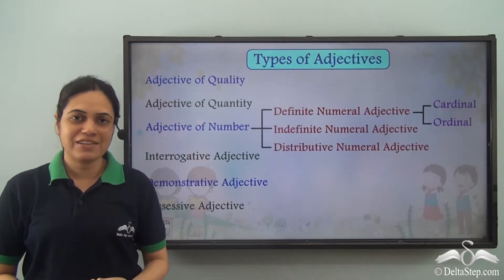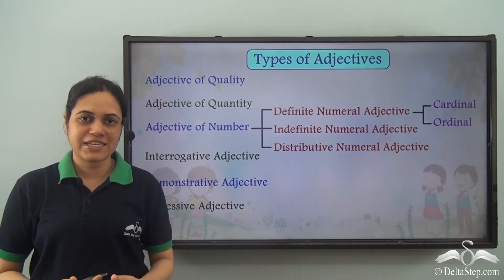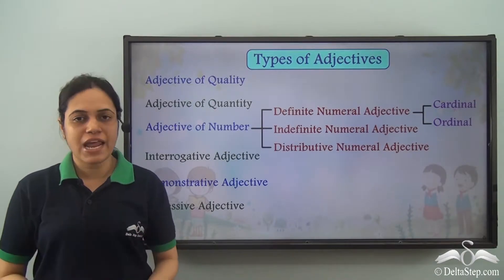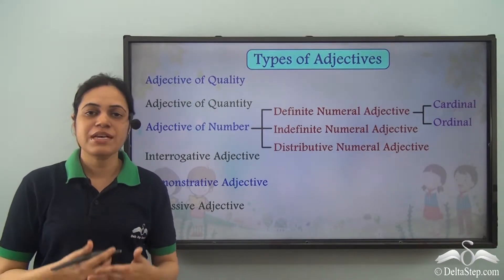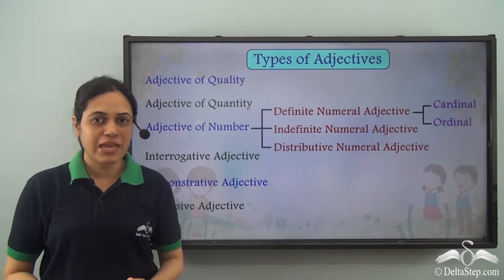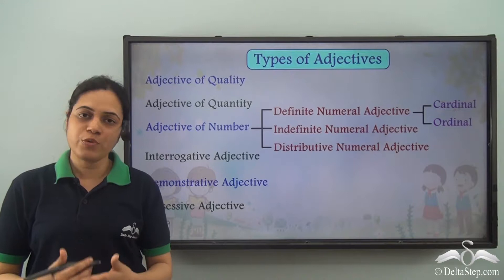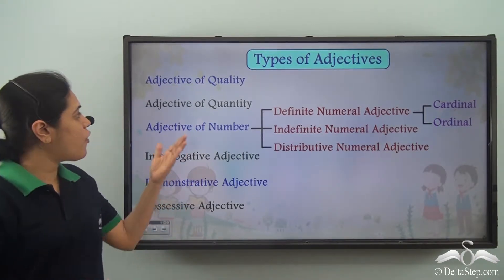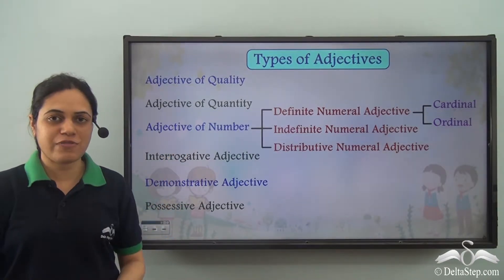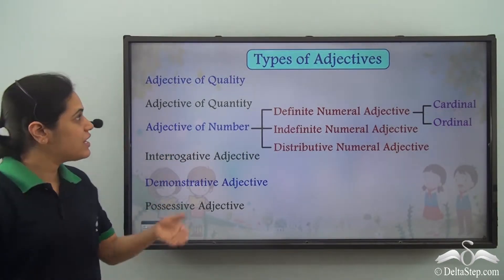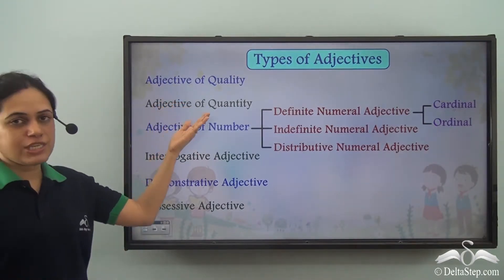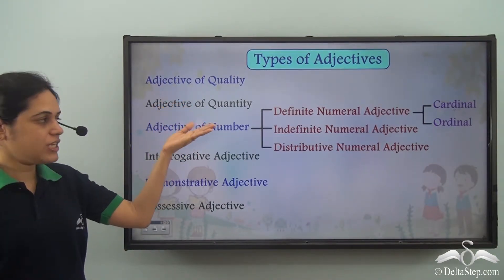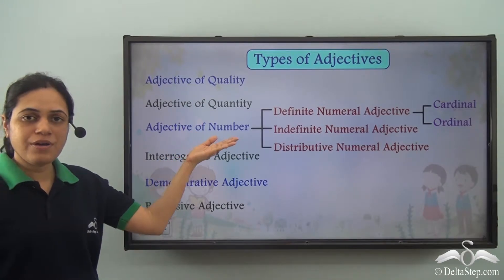We have already learned what adjectives are. Adjectives are describing words — they describe a noun or a pronoun. We have also learned the different types of adjectives like the adjective of quality, adjective of quantity, and adjective of number.